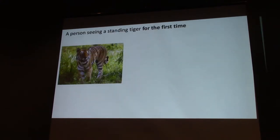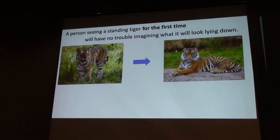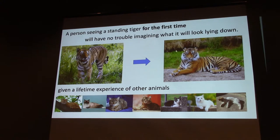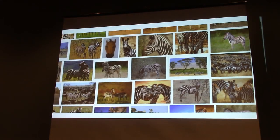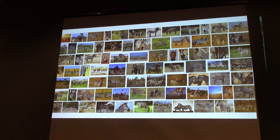This is a motivating example: for a person seeing a standing tiger for the first time, they can imagine how it looks when lying down — not because they've seen a tiger lying down before, but because they've seen many other cats lying down. You use this analogy to think about how a tiger will look in a different pose, or any new animal you see for the first time. We know that with tons of images you can do a very good pose-to-pose translation task.